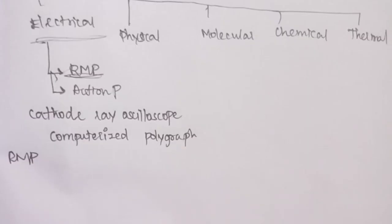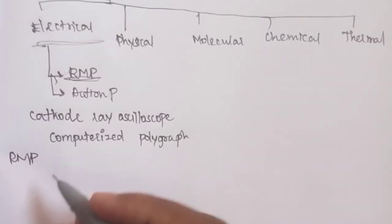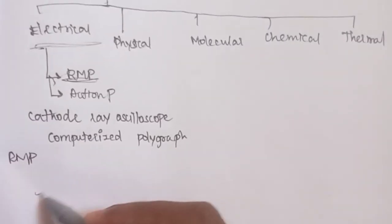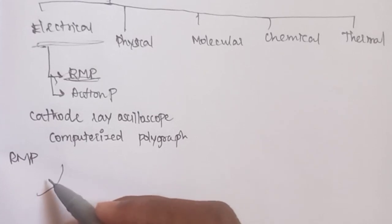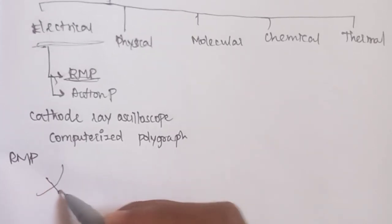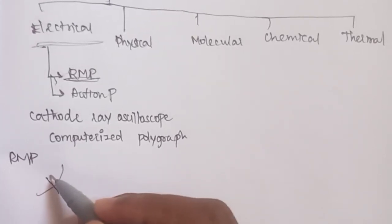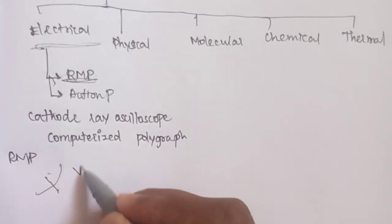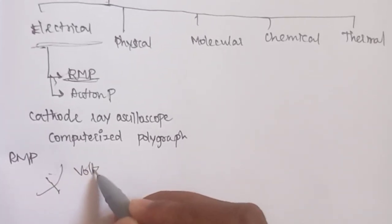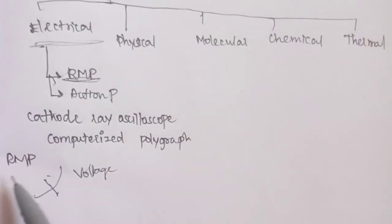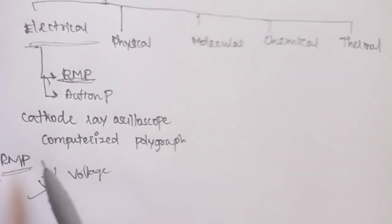The cell is in a resting condition. That is a potential difference. That is voltage. That is resting membrane potential.